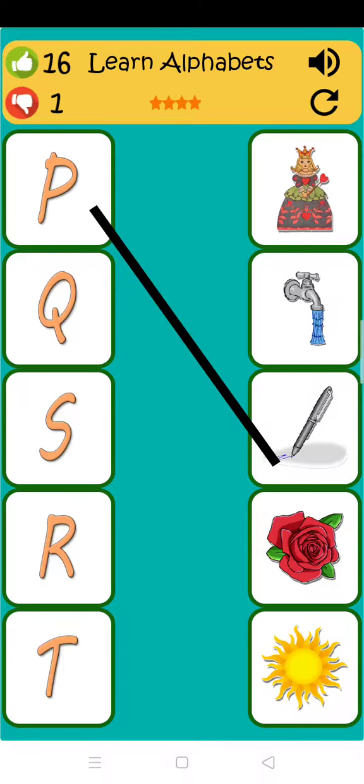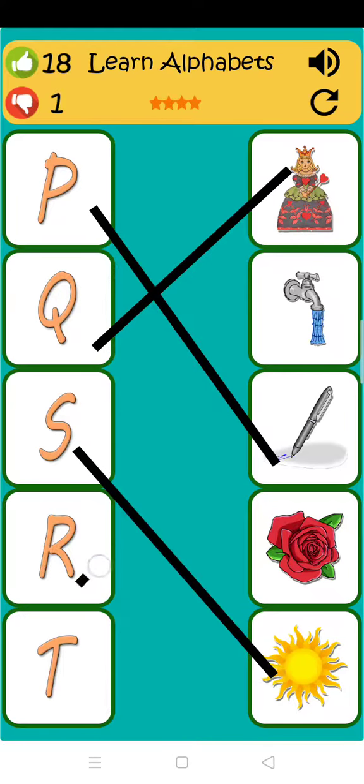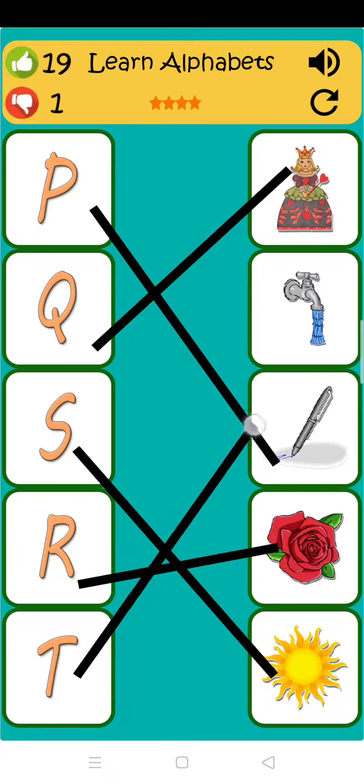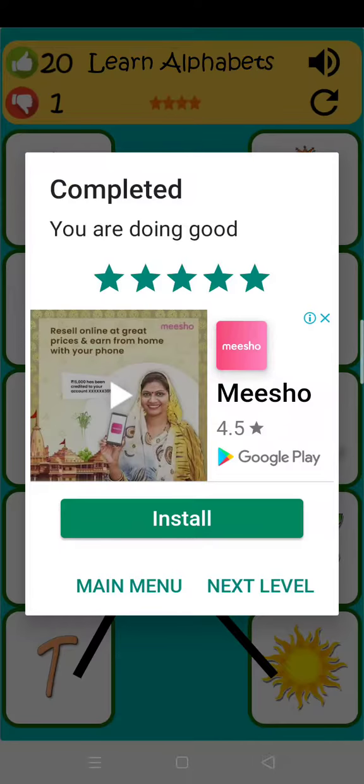P is for pen. Q is for queen. S is for sun. R is for rose. T is for table.